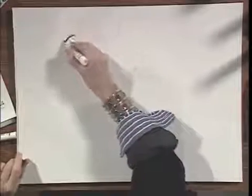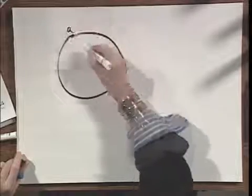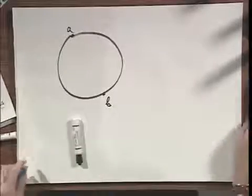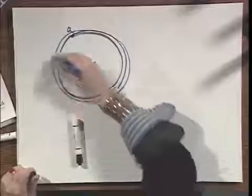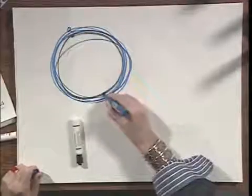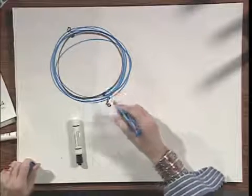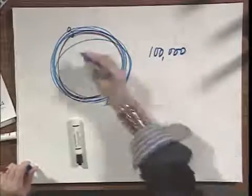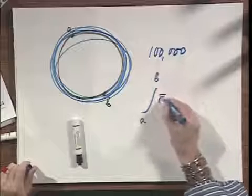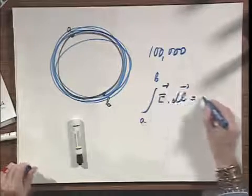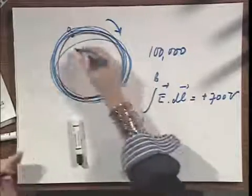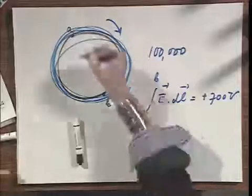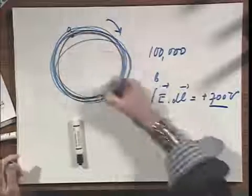I can go even further and show you the absurdity. If I have point A and point B, and I choose a closed loop that starts at A, goes around and around a hundred thousand times, and finally attaches to point B — then the integral from A to B of E·dl, believe it or not, is plus 700 volts if I start in one direction, or minus 700 volts if I start in the other. Can you say A is at 700 volts higher than B? That's nonsense, because going the other way it is 700 volts below B.